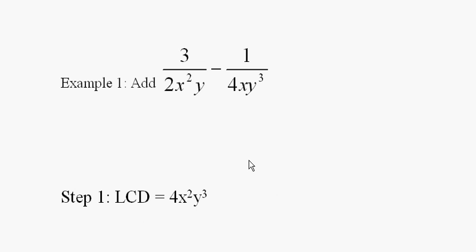And remember in the first two videos on adding algebraic fractions I told you how to do that. You look at the coefficients first and the lowest common denominator of 2 and 4 is 4. And then you look in both of these denominators and see what variables are present.